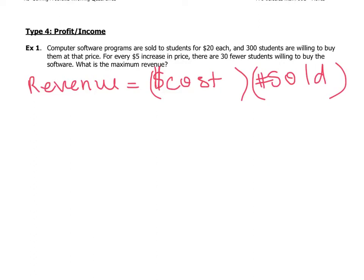Let's look at this first question: a computer software program sold to students for twenty dollars each. To set up these types of questions, write your twenty dollars as the current price inside a bracket. You know you're going to have a quadratic, so set up two brackets. At that twenty-dollar price, you have three hundred students buying.